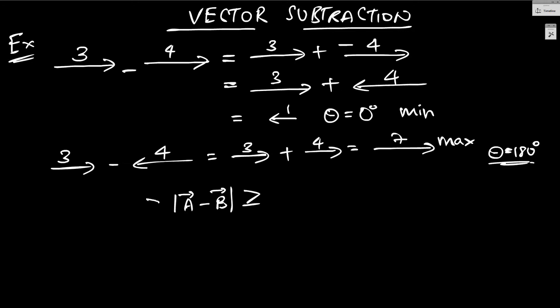and that is the difference between the two vectors, the difference of the magnitude and the sum of the magnitudes. But remember, you get the maximum value when theta is 180 degrees and you get the minimum value when theta is 0 degrees. That's the whole idea behind it.